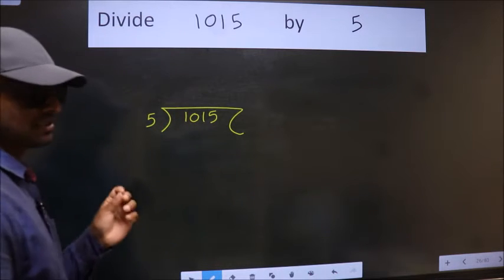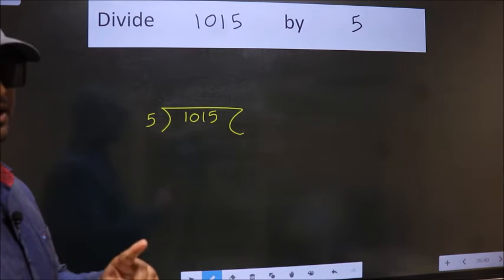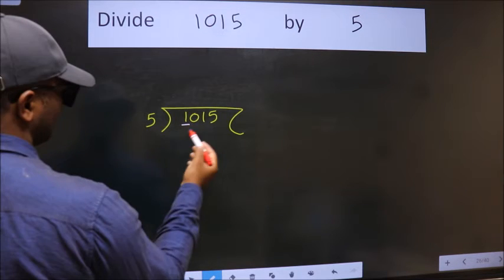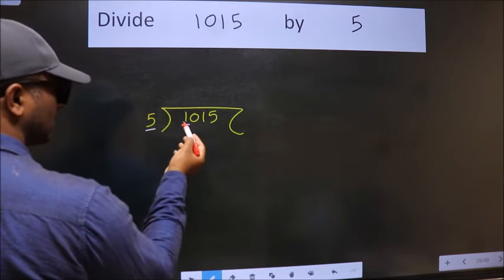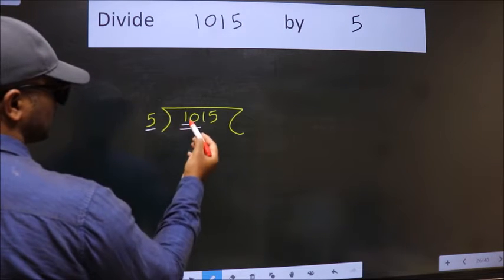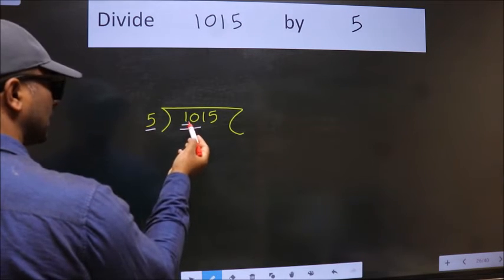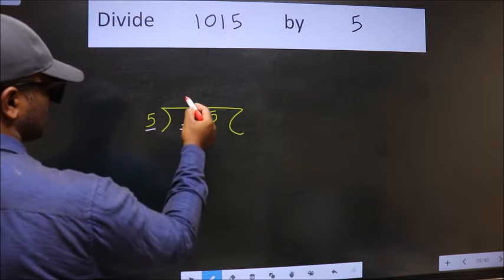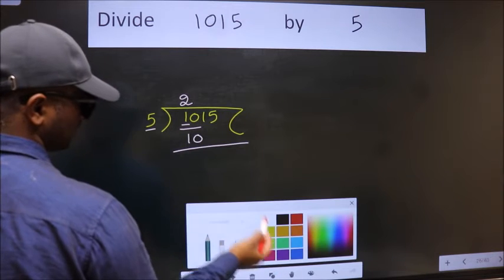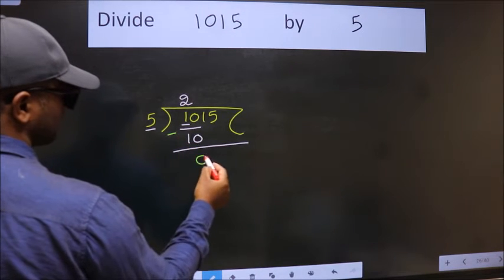This is your step 1. Next, here we have 1, here 5. 1 is smaller than 5. So, we should take two numbers: 10. When do we get 10? In 5 table, 5 times 2 is 10. Now, we should subtract. We get 0.